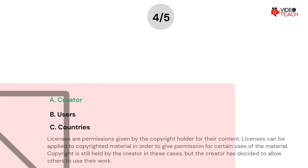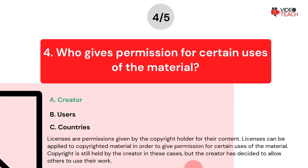The correct answer is A. Licenses are permissions given by the copyright holder for their content. Licenses can be applied to copyrighted material in order to give permission for certain uses of the material. Copyright is still held by the creator in these cases, but the creator has decided to allow others to use their work.